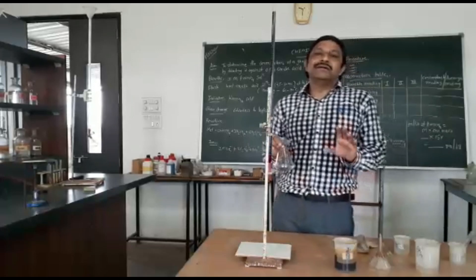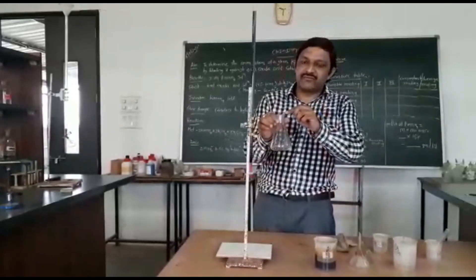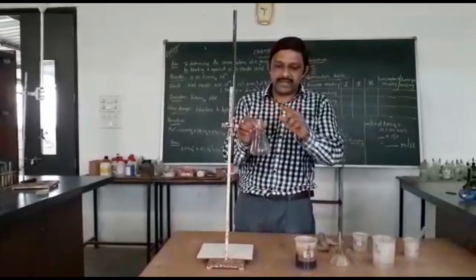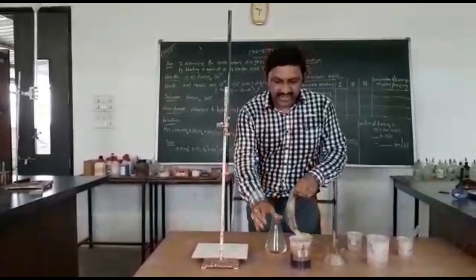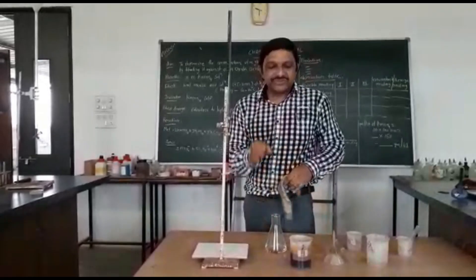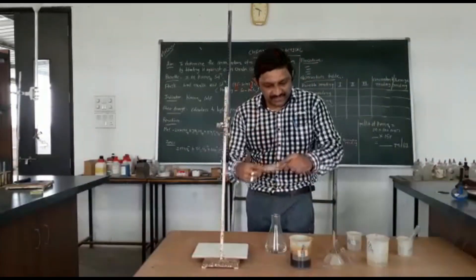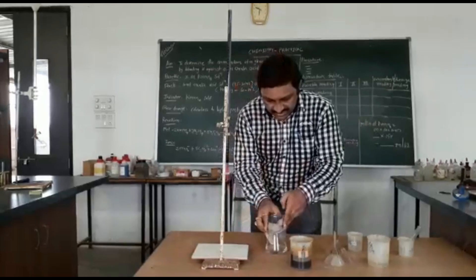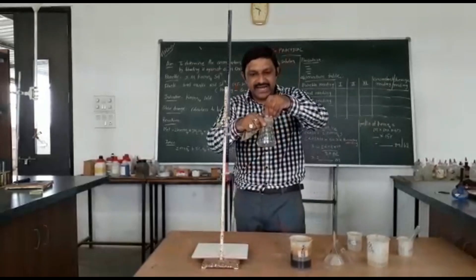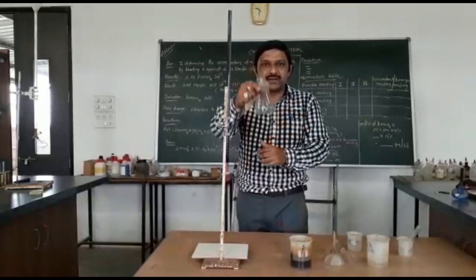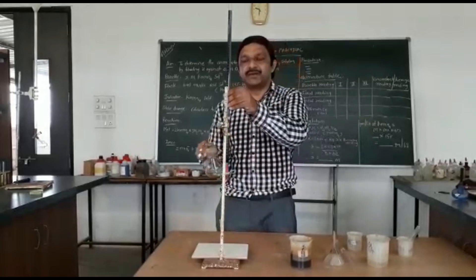You can see white vapour here, which means we have reached 60 to 70 degrees temperature. Now use your handkerchief to hold the flask and proceed to do your titration.